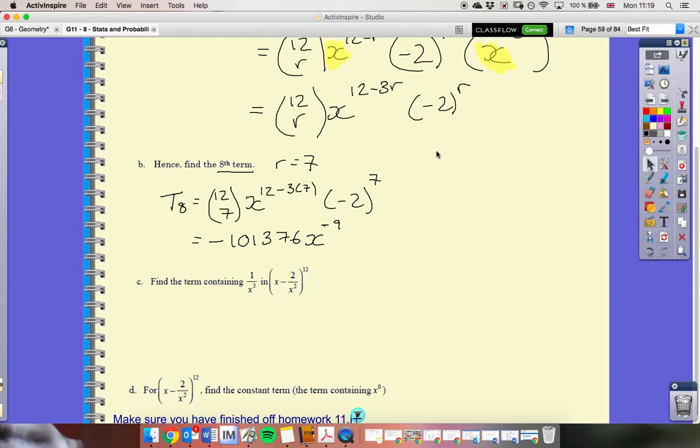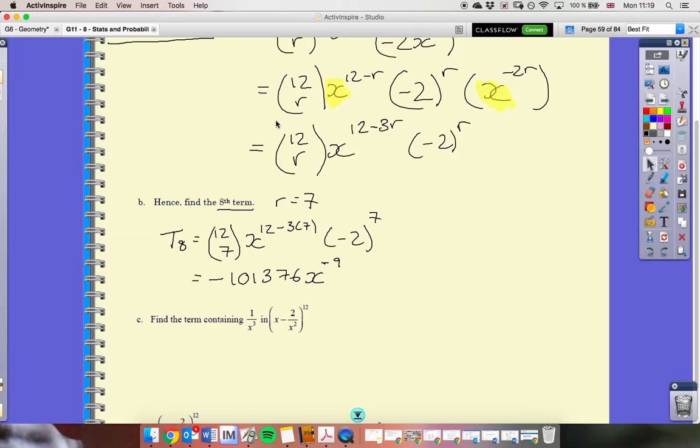Part C, we're going to be using this simplified version. We want to find the term containing 1 over x cubed. Well, we know 1 over x cubed is equal to x to the power of negative 3. So, I want to find what value of r gives me an exponent on the x, which is negative 3. So, I want this 12 minus 3r to be equal to negative 3. Because then I'll have the right term.